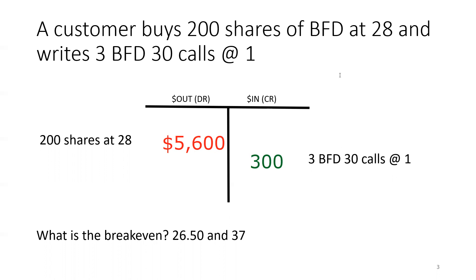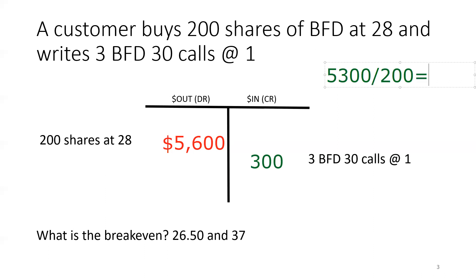So to get my break even — remember, it's being offered to me — I'm going to take the $5,300, which is my net out of pocket cost, divide by the 200 shares, and I get the break even here in this ratio write: 46 and a half. So that's how we go about doing that.